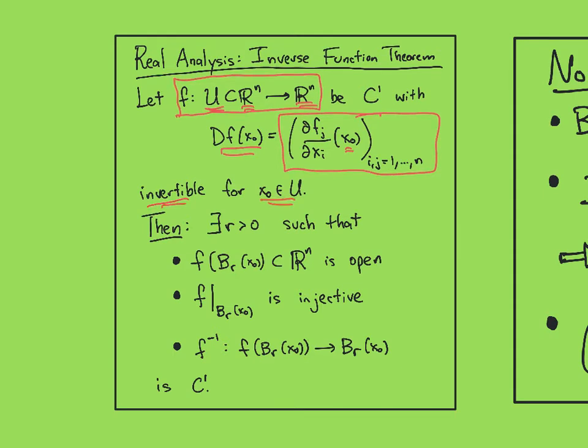And then that implies that f is locally invertible, meaning there exists an R such that the ball of radius R centered at x0, the image of that ball is open in R^n, and the restriction of f to that ball is injective.